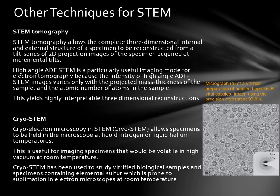Other techniques for STEM such as STEM tomography allow the complete three-dimensional internal and external structures of a specimen to be reconstructed from a tilt series of 2D projection images of the specimen acquired at incremental tilts. High-angle ADF STEM is a particularly useful imaging mode for electron tomography because the intensity of high-angle ADF STEM images varies only with the projected mass thickness of the sample and the atomic number of atoms in the sample, yielding highly interpretable three-dimensional reconstructions. Cryo-STEM, which is cryo-electron microscopy in STEM, allows specimens to be held in the microscope at liquid nitrogen and liquid helium temperatures. This is useful for imaging specimens that would be volatile in high vacuum at room temperature. Cryo-STEM has been used to study vitrified biological samples and specimens containing elemental sulfur, which is prone to sublimation in electron microscopes at room temperature.